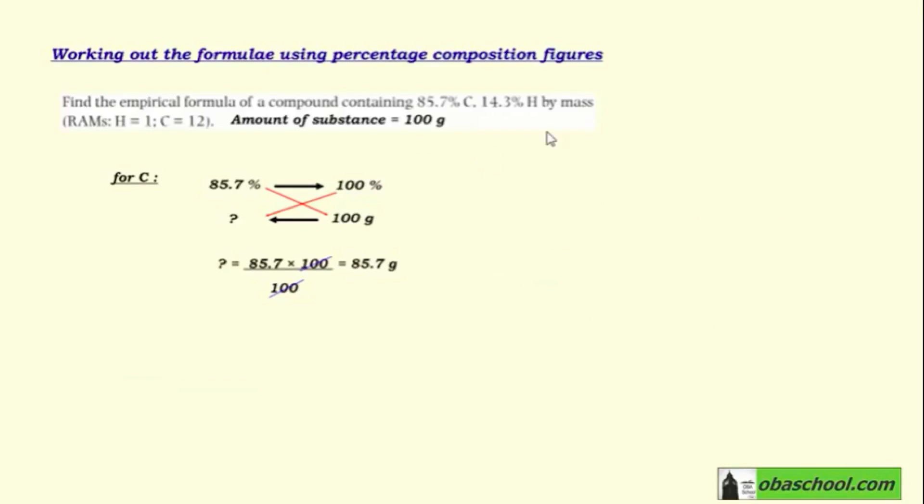Similarly, for hydrogen, applying the same method, we get 14.3 grams. So these are the masses of carbon and hydrogen.